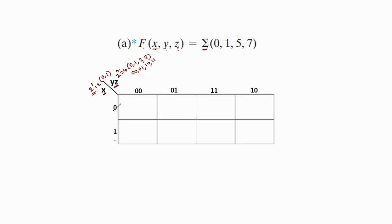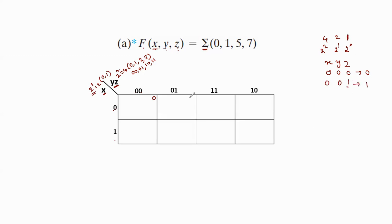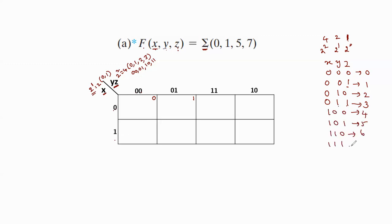We assign a number to each box. For the first box, x=0, y=0, z=0. Based on binary weights 2⁰, 2¹, 2², the equivalent values are 1, 2, 4. Since all bits are 0, the minterm number is 0. For x=0, y=0, z=1, the value is 1. For x=0, y=1, z=1, it is 2+1=3. For x=0, y=1, z=0, it is 2. For x=1, y=0, z=0, it is 4. And x=1, y=1, z=1 gives 7. In this way, we assign numbers to each and every box.